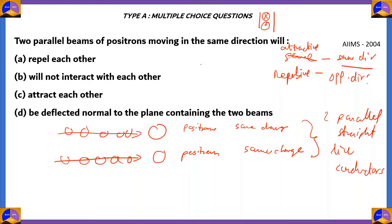Since the positrons are parallel beams moving in the same direction, option C — attracting each other — is the right option. Option A would only apply if they moved opposite to each other. Option D — deflected normal to the plane — is incorrect because a separate external magnetic field would be needed. Option B — will not interact — is also incorrect because they have magnetic fields around them and must interact. So option C, attract each other, is correct because the current is in the same direction, making the force attractive.